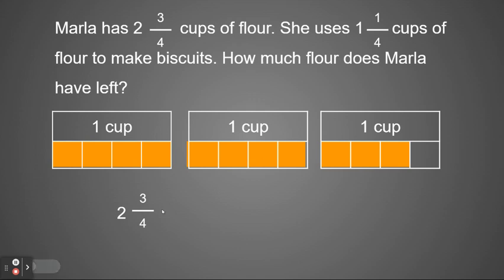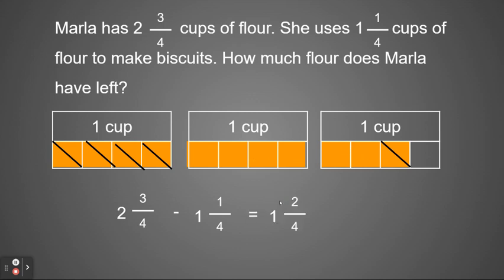This time we're not getting more — instead we're going to be taking away, so we need to subtract one and one fourth. I'm going to cross out one whole and one part of the fourth. I chose to cut it off at the end to keep the one whole together to make it easier to see. Looking at the picture, I can see I have one whole plus two more parts, so it equals one and two fourths. This could also be written as one and one half, because two fourths equals one half.